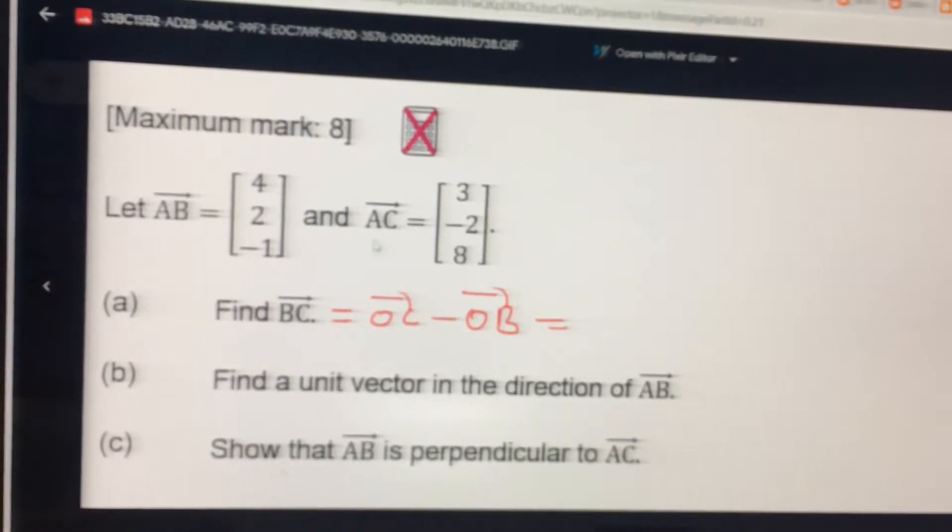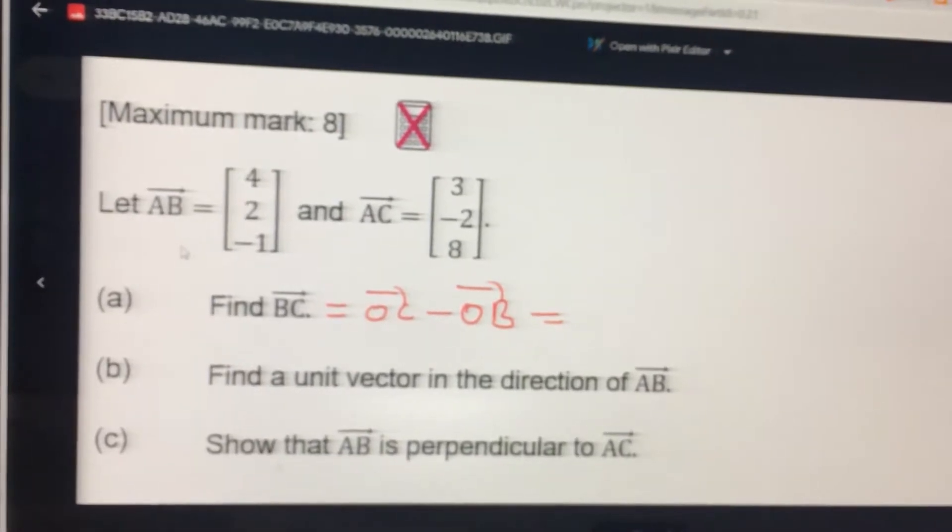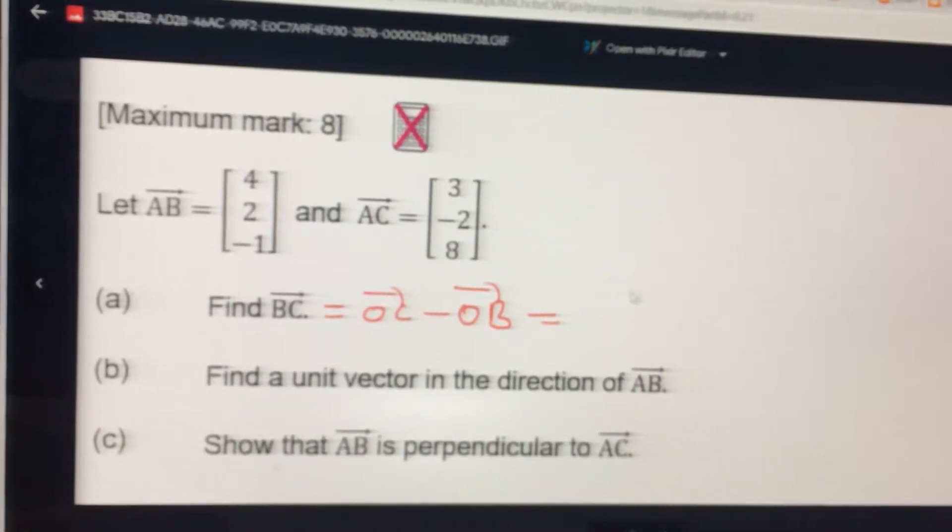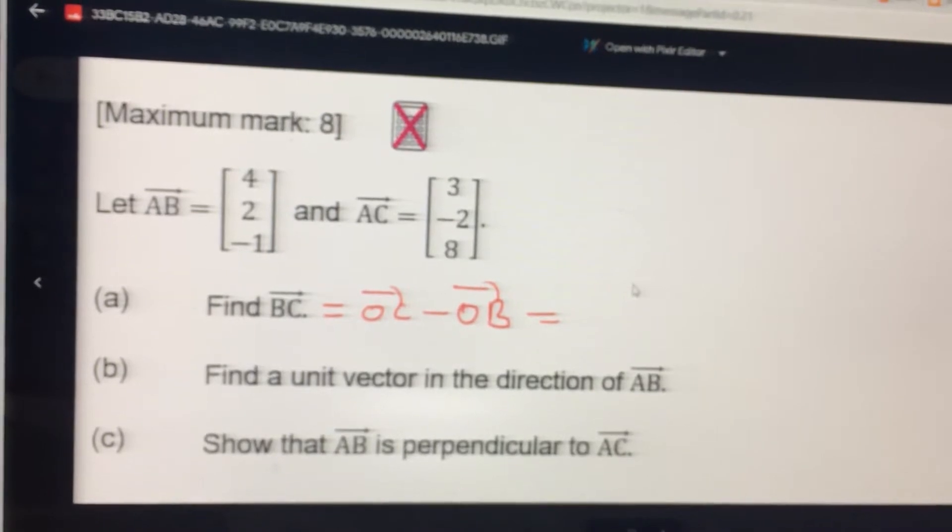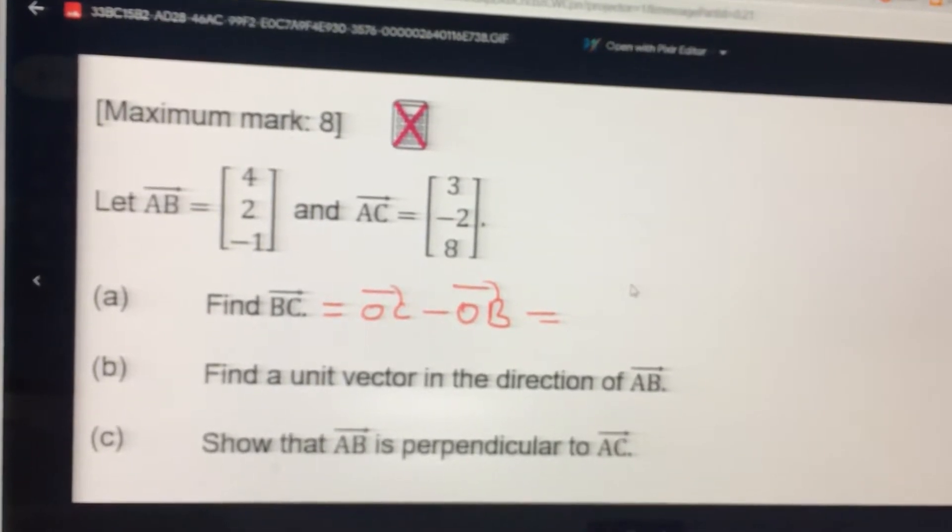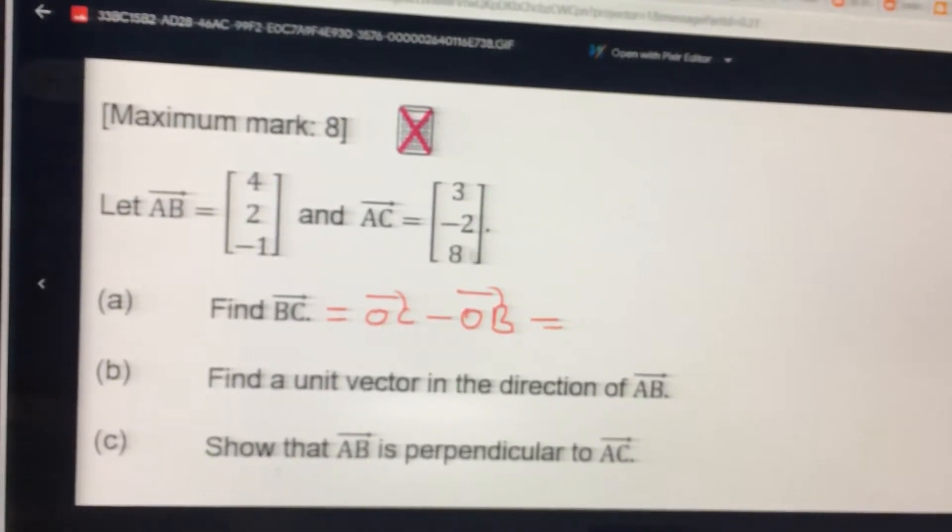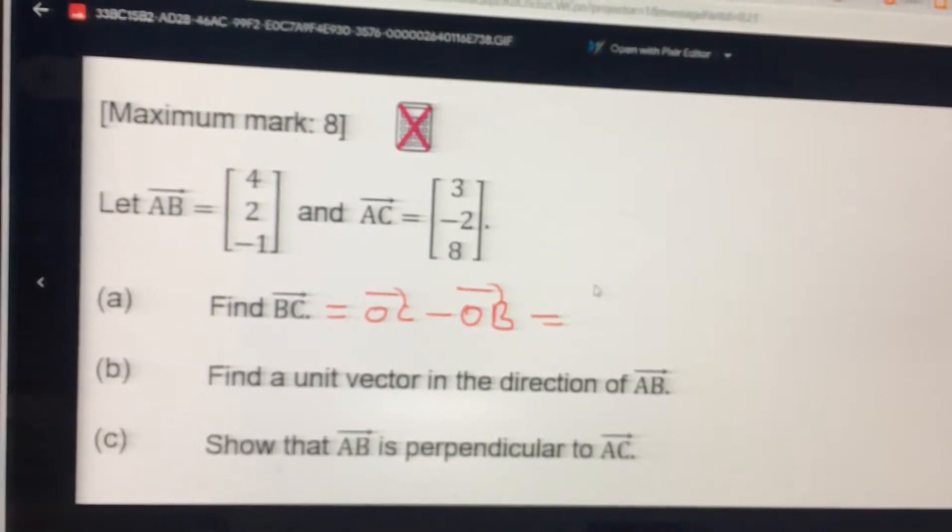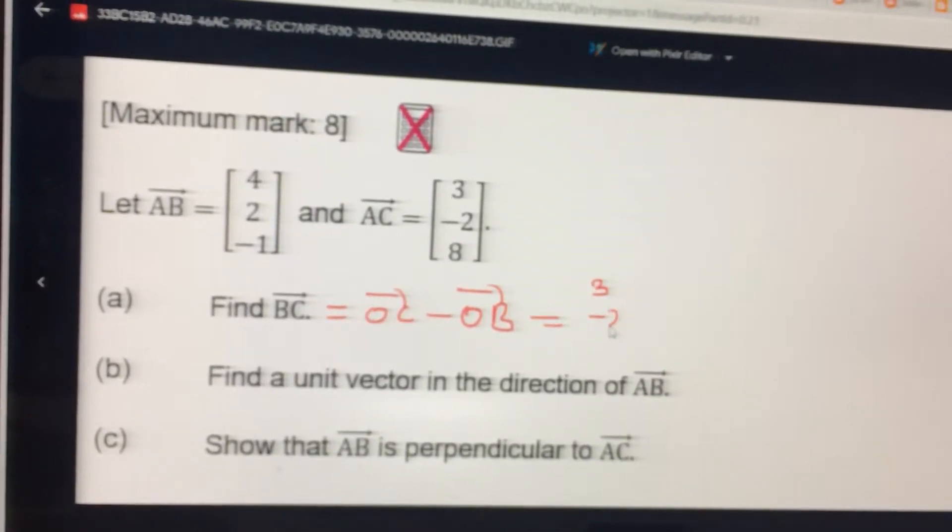But here AC is given, AB is given. So it will be BA minus AC? No, BA minus... C should come first, C should come. This one: [4, 2, -1] minus [3, -2,...